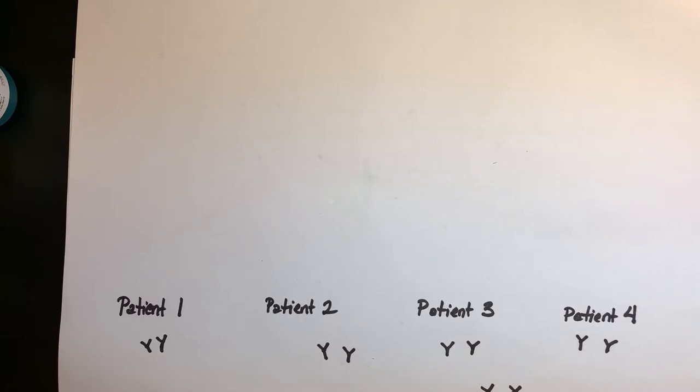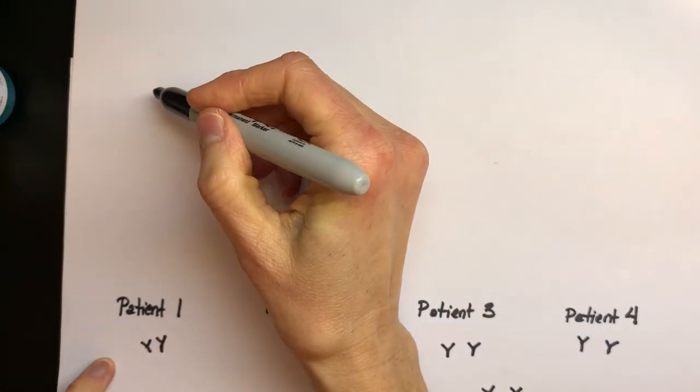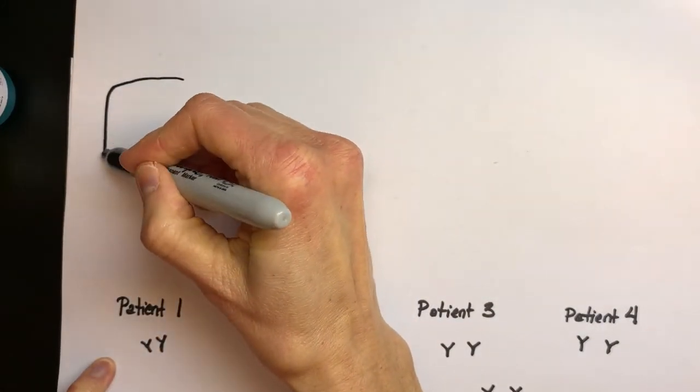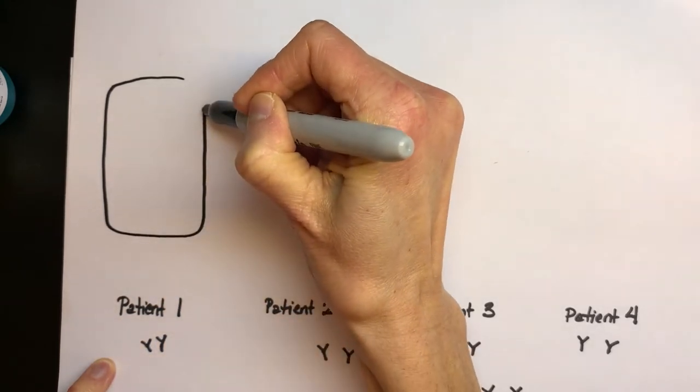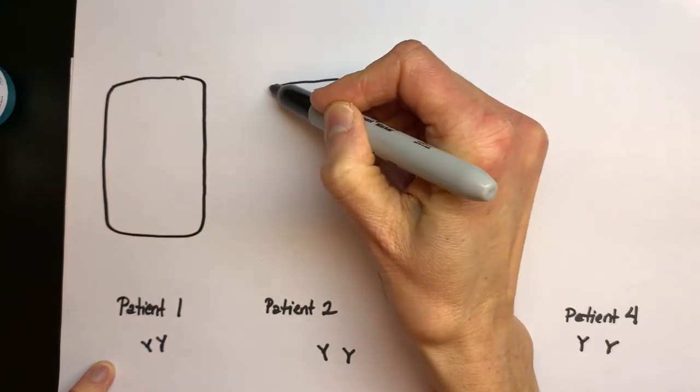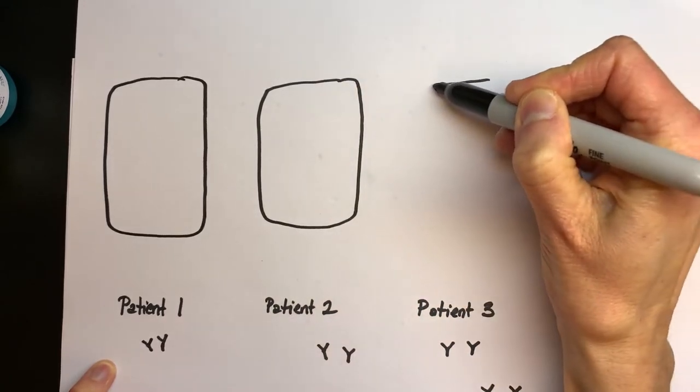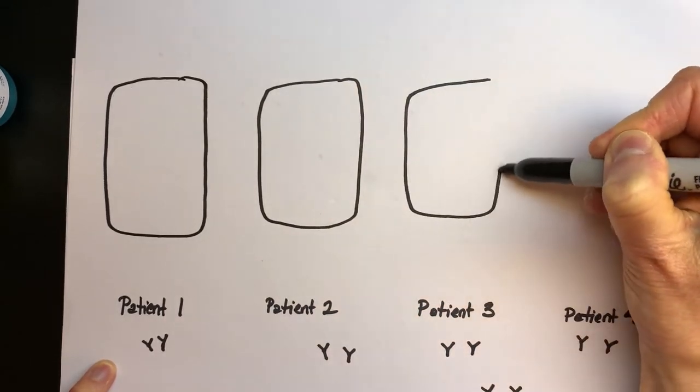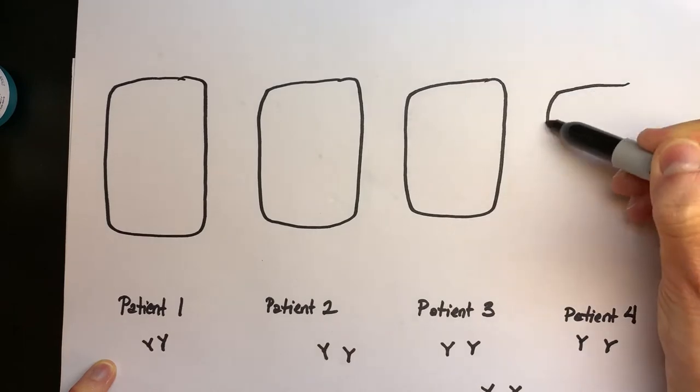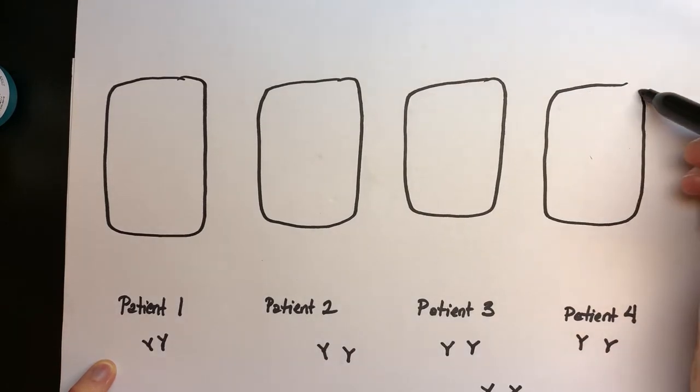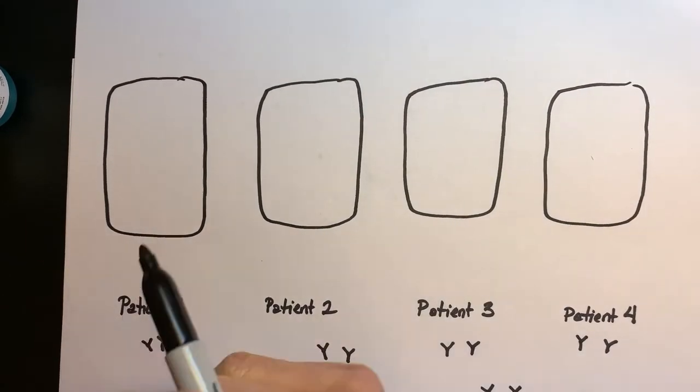Let's try this without the trays and draw what these wells would look like with those same answers that we got with patient 1, 2, 3, and 4 in our prior experiment.